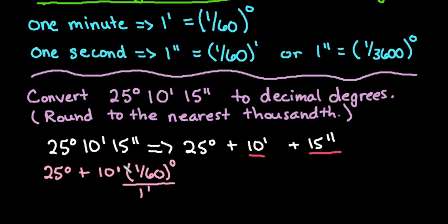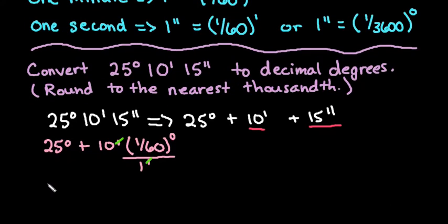What this does is it cancels my minutes out, and so really I have 10 times 1 over 60, which if you want to go ahead and reduce that, that would be 25 plus 10 times 1 over 60 would end up being 1/6th or 10 over 60.